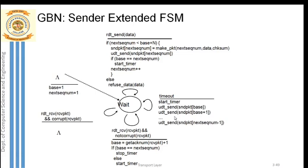To summarize the FSM: the timer handling covers correct acknowledgement received, corrupted acknowledgement received, and packet transmission in Go-Back-N protocol. Before all these, do not forget to initialize the pointers: base equals one and next sequence number equals one, both pointing to the first packet inside the window.